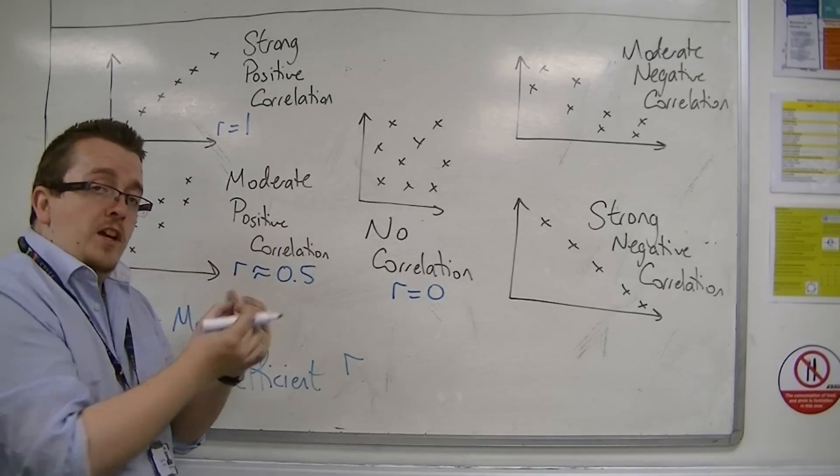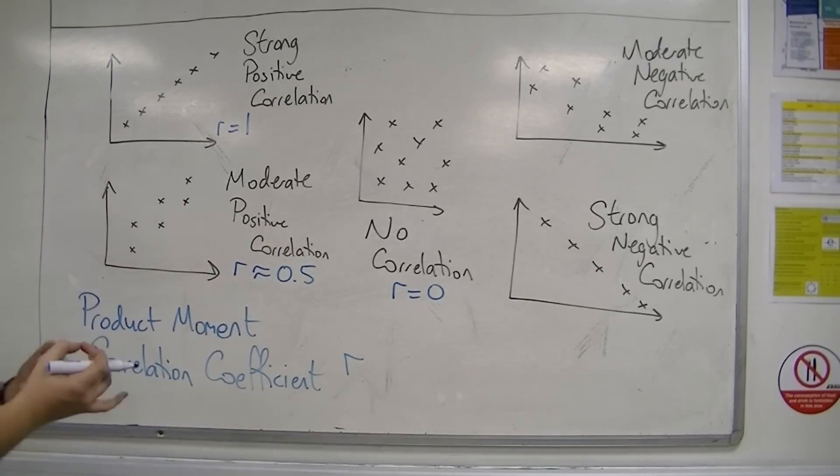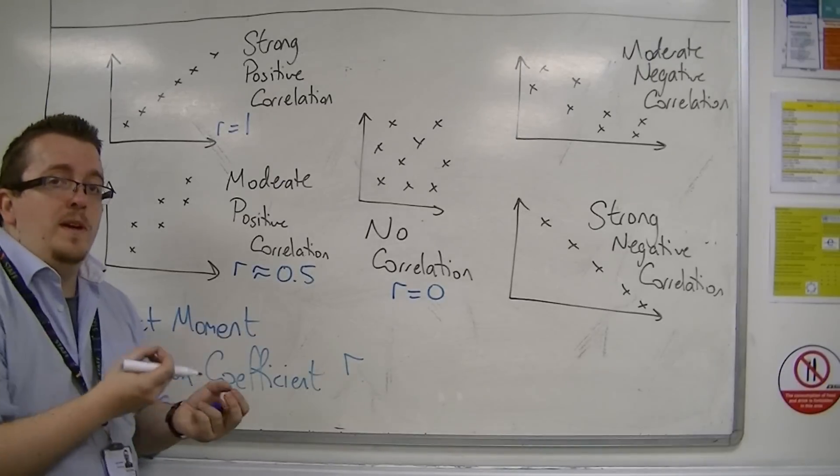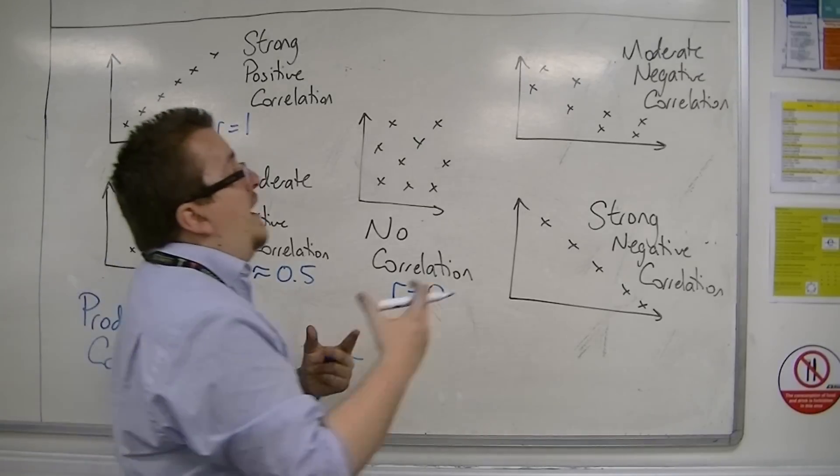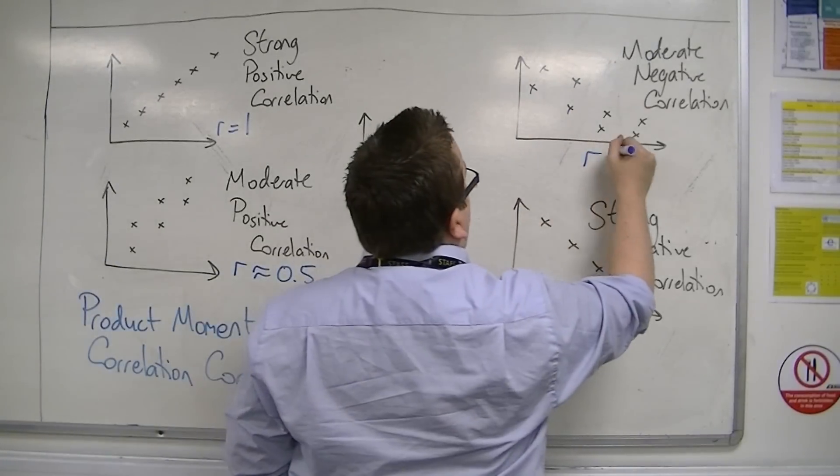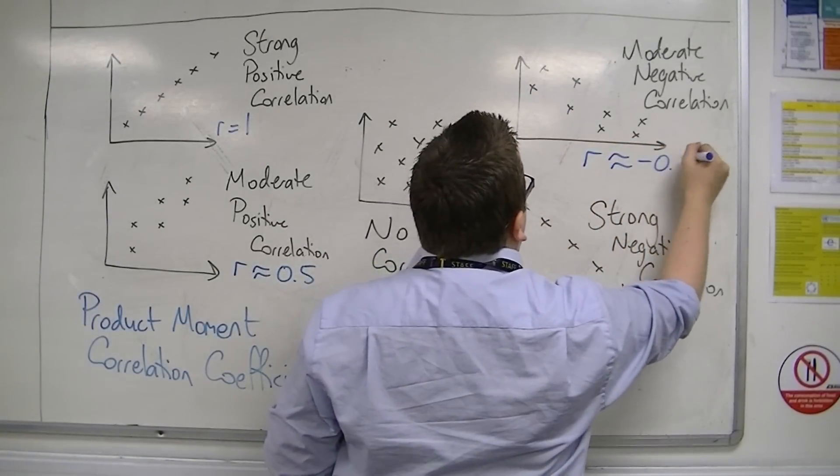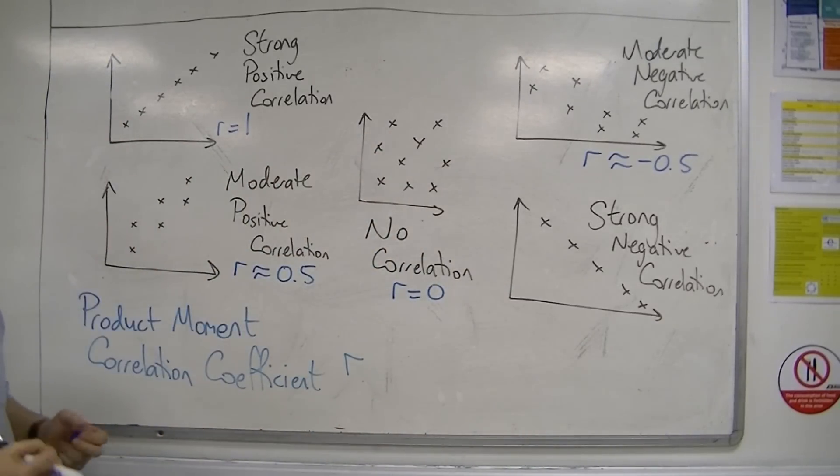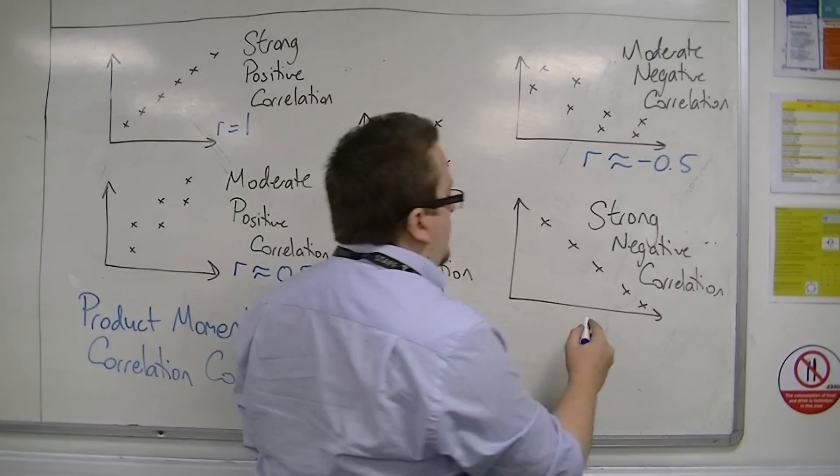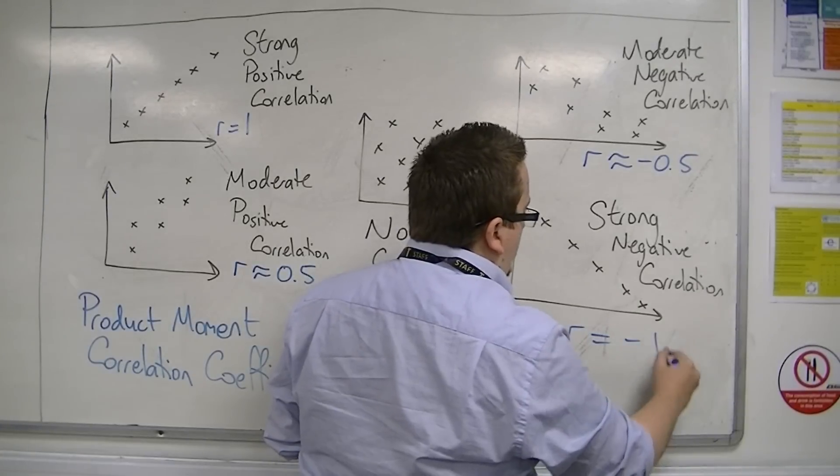Values of R that are close to 0 show that there's really no correlation between the two things that you're looking at. Then, when R is roughly minus 0.5, you'd be at moderately negative correlation, and then when you get to strong negative correlation, you'd be closer to minus 1.